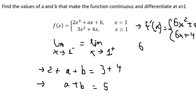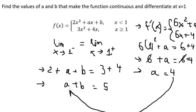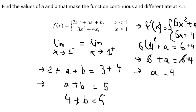After differentiating, we need the derivatives to have the same value at x equals one. Substituting x equals one into the right derivative gives 6 plus 4 equals 10. The left derivative at x equals one gives 6 plus a. Setting them equal: 6 plus a equals 10, so a equals 4.